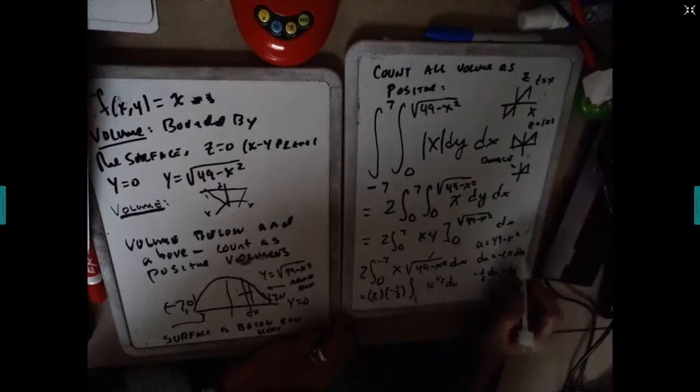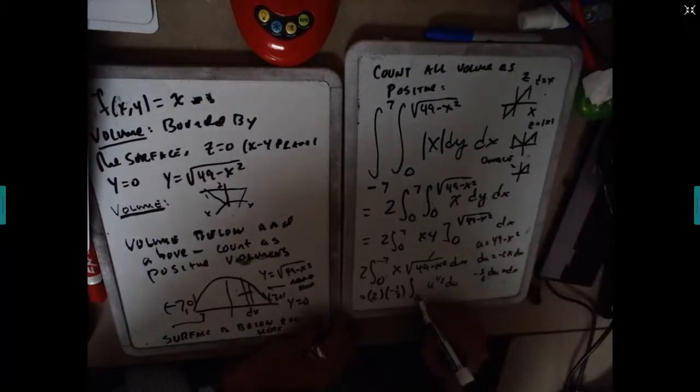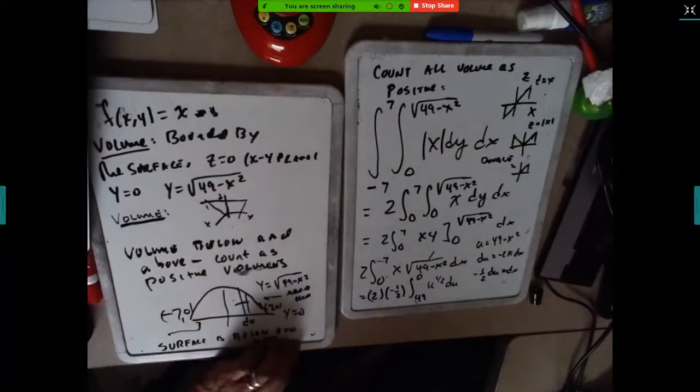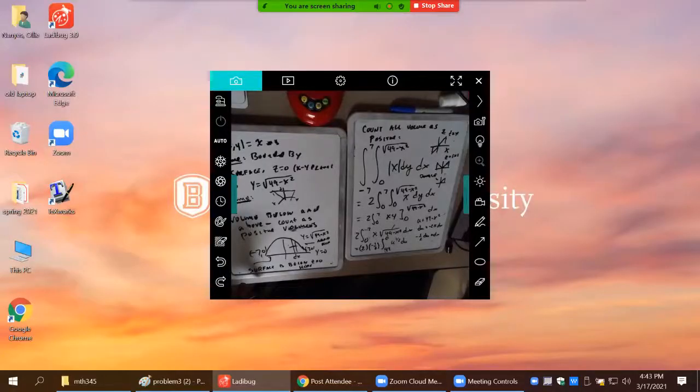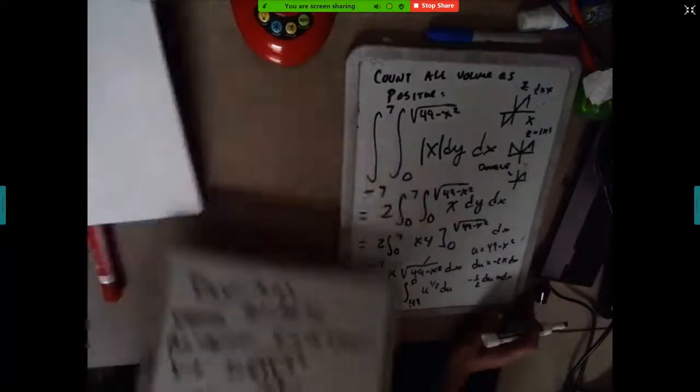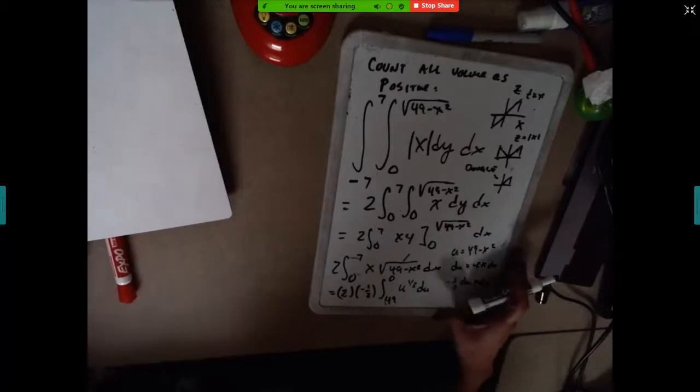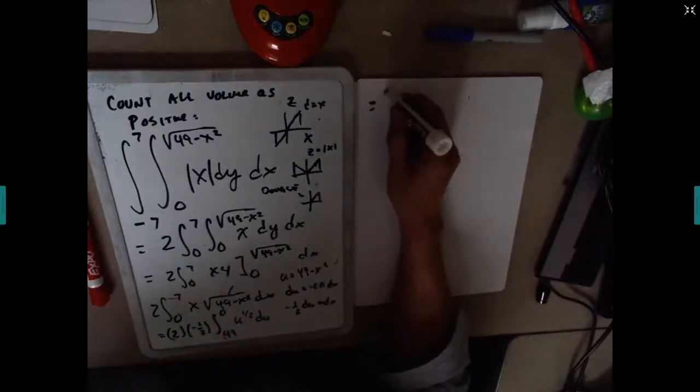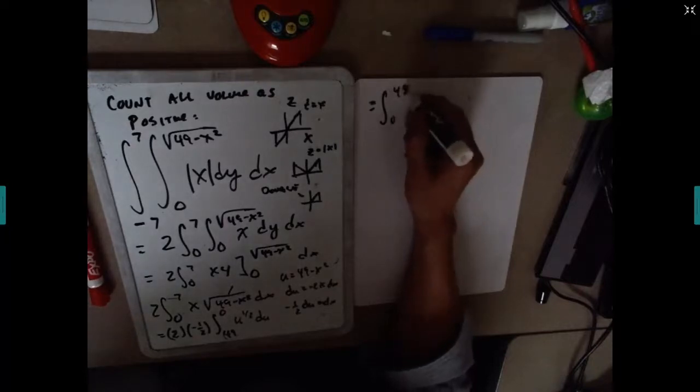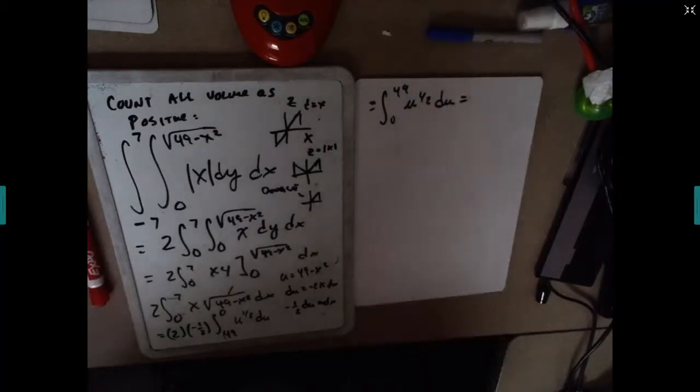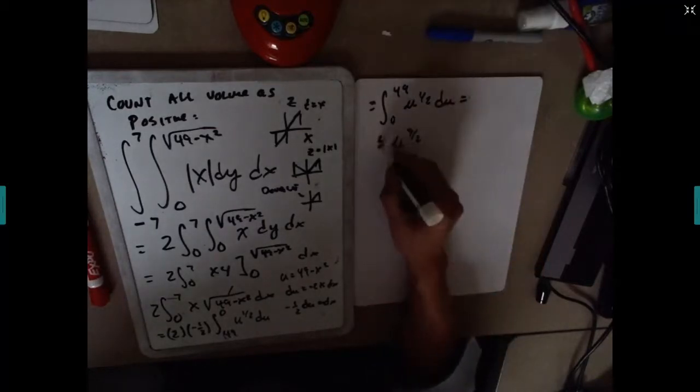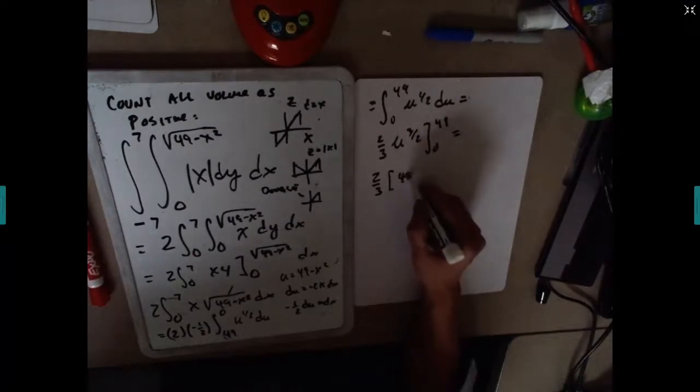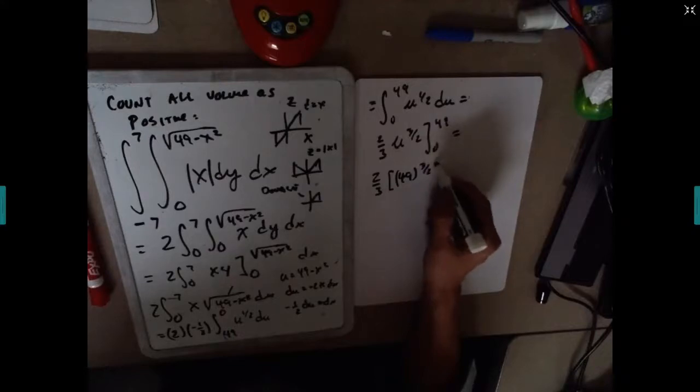And then I'm going to go ahead and change my limits. If x is zero, this is 49, and if x is seven, that's zero. So we got that right there. Then let's go ahead and finish this up. These minuses will flip this, so this turns out to be the integral from 0 to 49 of u to the one half du, which equals u to the three halves times two thirds.